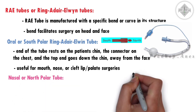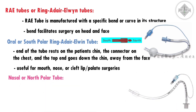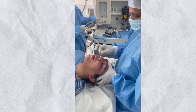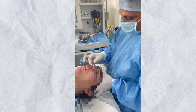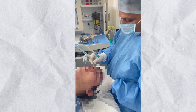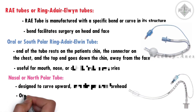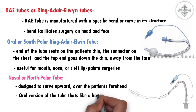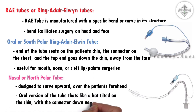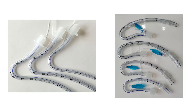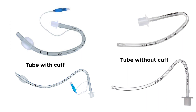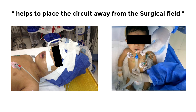The nasal, or north-polar, version of the Ring-Adair-Elwin tube is designed to curve upward, like a smiley face, over the patient's forehead. This curved design takes pressure away from the nose. There is also an oral version of the tube that is like a hat tilted on the chin, with the connector down near the chest, which is great for surgeries inside the mouth. Both versions come in different sizes and can have cuffs or not. The main advantage is that the curve of the tube helps place the circuit away from the surgical field.